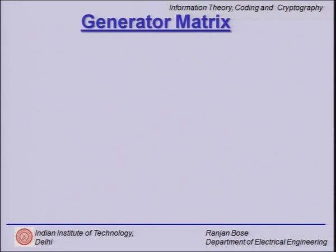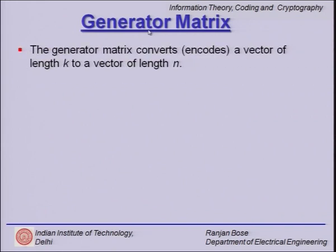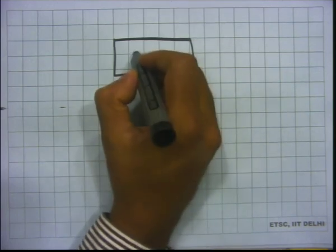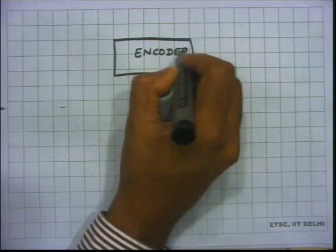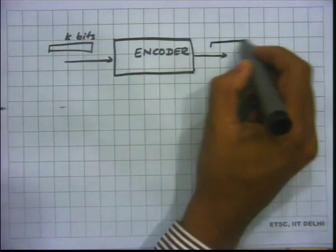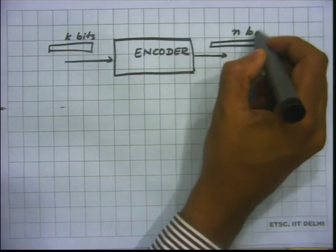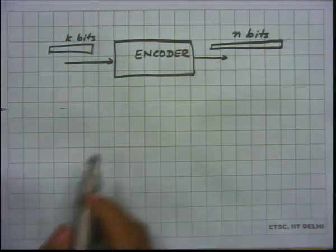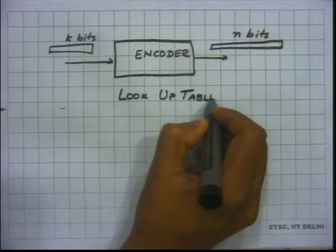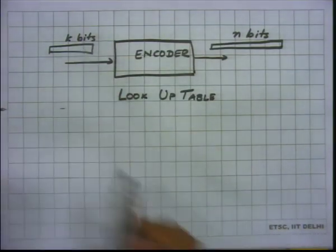This is clearly not a very methodical way to move forward. We now ask ourselves the most basic question: is there a smart way to generate a linear block code? The motivation is that a generator matrix converts — that is, encodes — a vector of length k to a vector of length n. The encoder takes k bits and converts them into longer n-bit codewords.